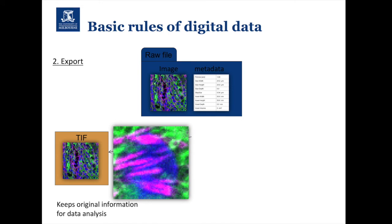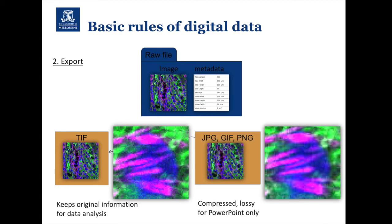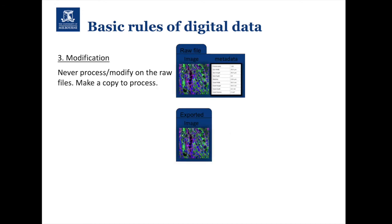Second, if you're going to export your data, please export it in the TIFF file format, because this keeps the original information for any downstream quantitative analysis. The issue with using JPEG, GIF, or PNG is that they often use lossy compression, which means you lose information. You can still see in the two example images that the right-hand one is more averaged out, with a little less information. You can still use these formats for PowerPoint or printing for your lab book, but for any quantitative analysis, save as TIFF.